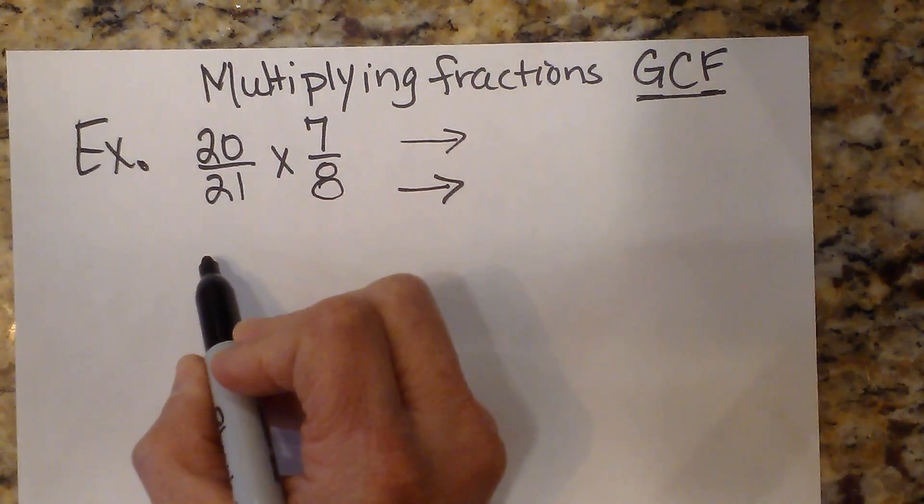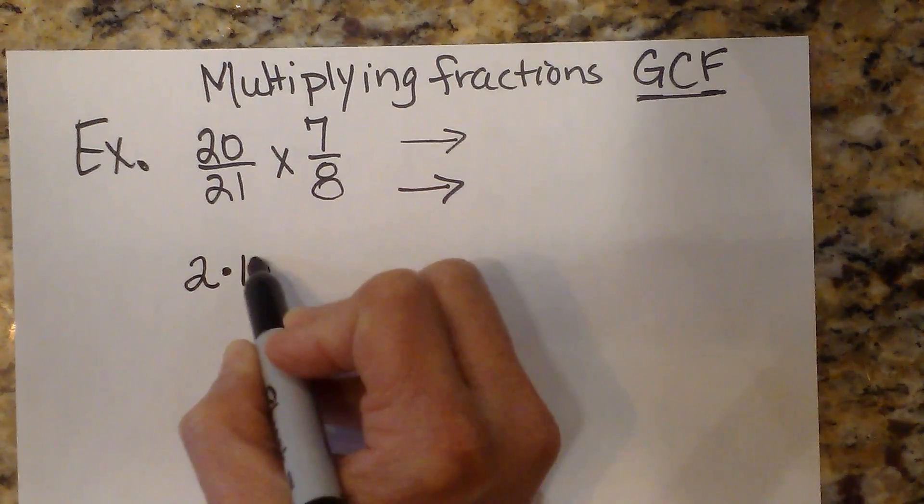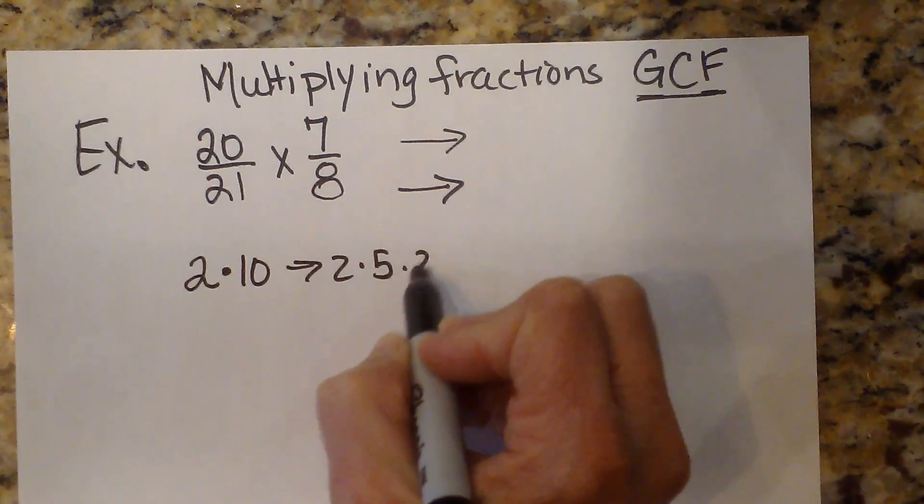I'm going to take 20 and I'm going to factor it to 2 times 10, which then becomes 2 times 5 times 2.